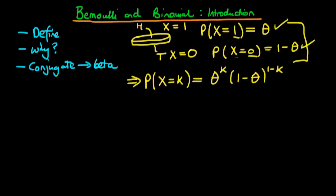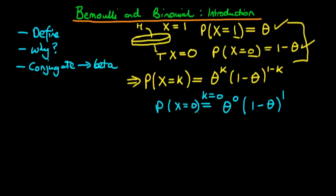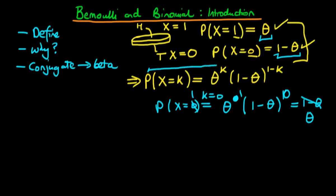Let's double check that this formula reproduces each individual case. If k equals zero, then we have theta to the power zero times one minus theta to the power one, which is just one minus theta — reproducing the case when x equals zero, i.e. we get a tail. Similarly, if we set k equal to one, the second term becomes one minus theta to the power zero which is one, and the right hand side becomes theta for the case when x equals one. So in both cases it reproduces the probability. This is our probability distribution for a binary indicator variable considering one particular flip — what is known as the Bernoulli distribution.